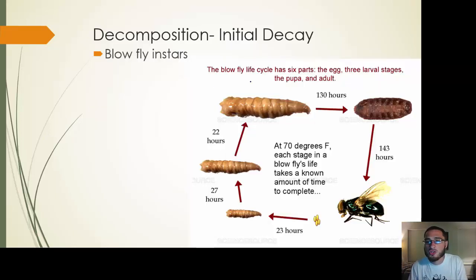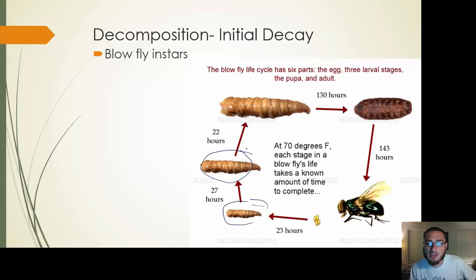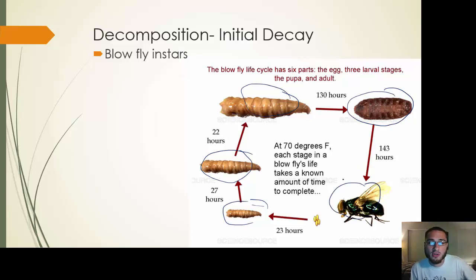This shows another example of the blowfly life cycle — eggs becoming first instars, second instars, third instars, going into the ground to pupate, and then adult blowflies starting the life cycle all over again.